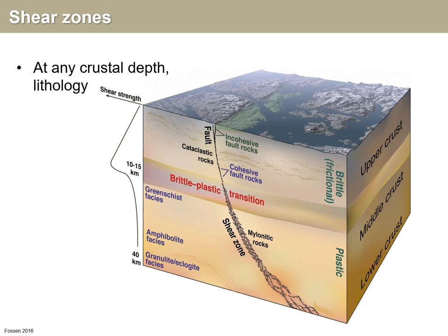So if we have a fault, a big fault at the surface, there's a good chance it will transition into a shear zone at depth through what's called the brittle-plastic or brittle-ductile transition. Usually a shear zone is considered to be wider, especially at depth, than the corresponding fault in the upper brittle crust.